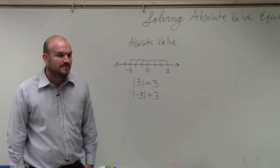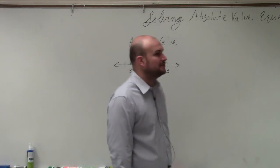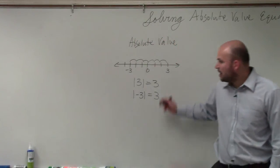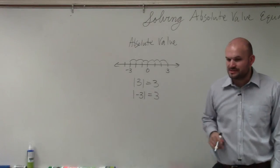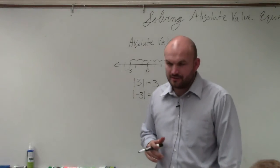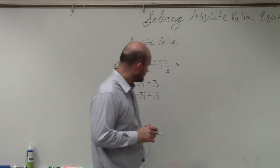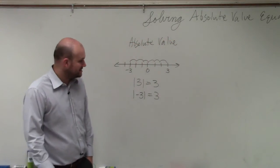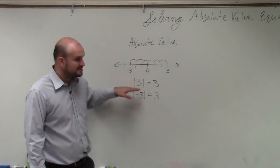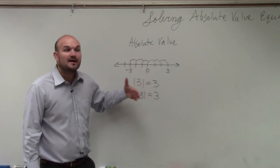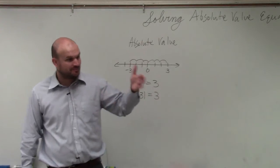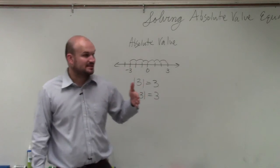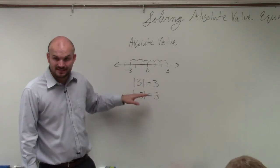So the absolute value of a positive or a negative is always going to represent a positive solution. A couple things I want you to understand. First of all, the absolute value symbols represent absolute distance. They do not represent grouping symbols. They are not like parentheses or brackets. They represent the absolute distance.